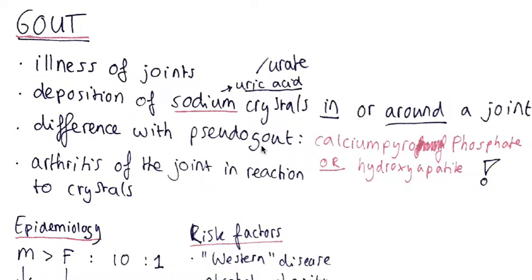Today I will tell you something about gout. So first, start with a question: what is gout? It is an illness of the joints and it's the deposition of sodium urate crystals in or around a joint. You might also have heard about pseudogout, and the difference is in the crystals.